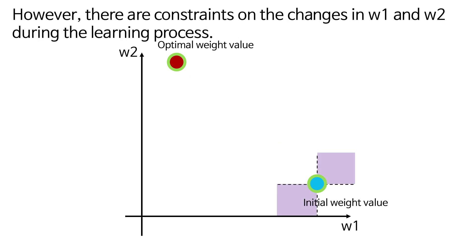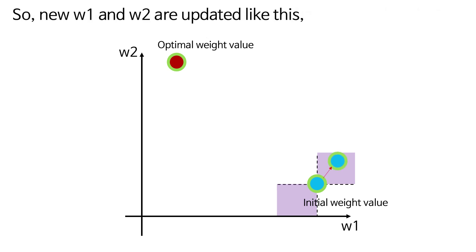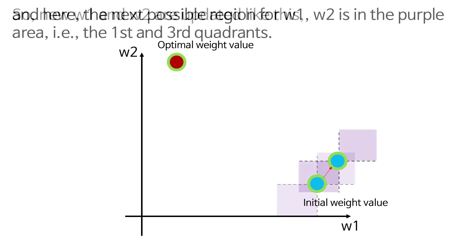However, there are constraints on the changes in W1 and W2 during the learning process. So, new W1 and W2 are updated like this, and here, the next possible region for W1, W2 is in the purple area, in other words, the first and third quadrants.